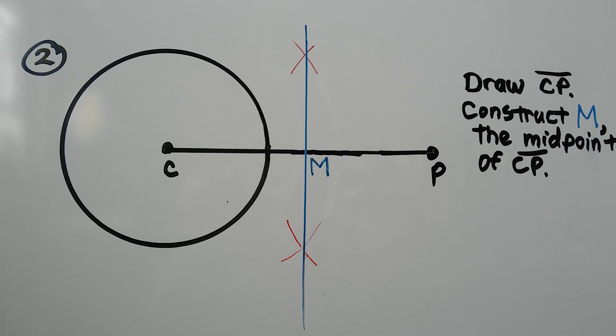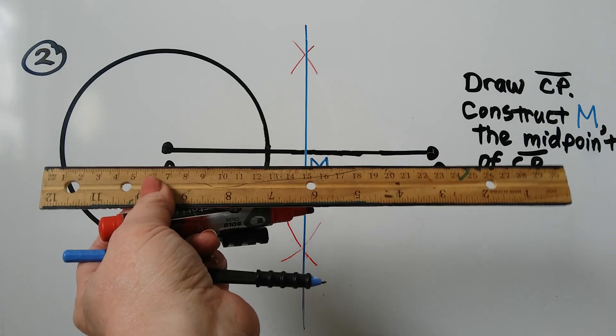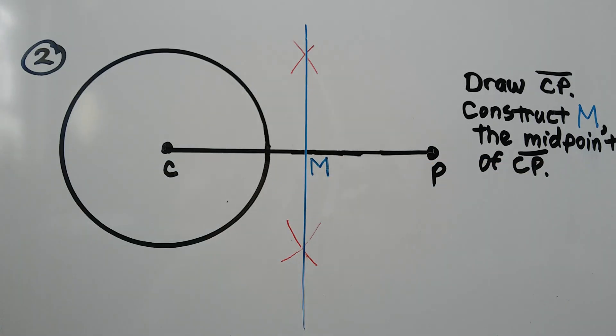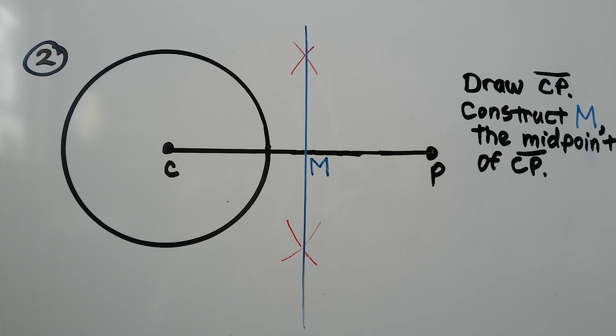So that's what we do. We make our midpoint. We're going to draw CP. Just take your straight edge and connect CP like that. Now we're going to construct M. That's going to be the midpoint of CP.